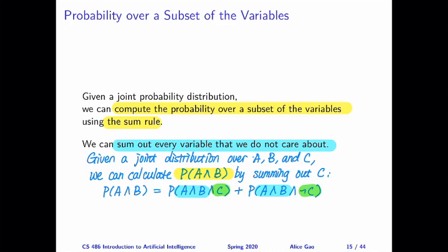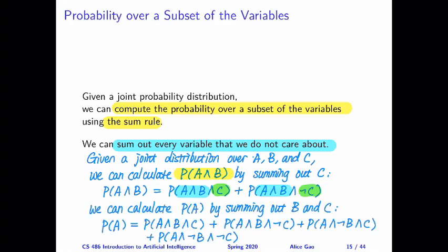For the second example, we only care about a being true and we don't care about b and c, so we want to sum out both b and c. For two Boolean variables, we have four possible combinations of values, so there are four terms to consider. In these four terms, we fix the value of a to always be true, but we vary the values of b and c, considering all four possibilities: both true, one true and one false, and both false.